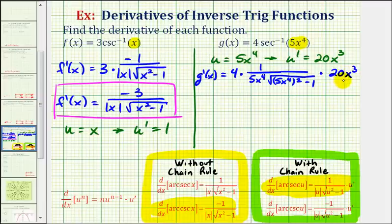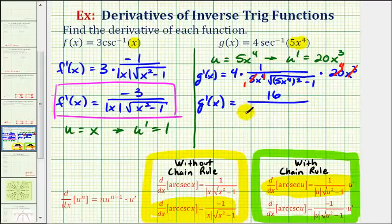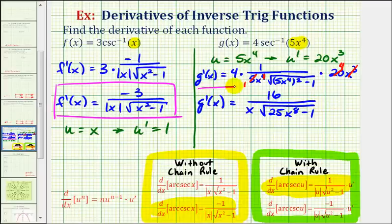Now let's simplify and find this product. Will the five and the twenty simplify? Notice how five simplifies to one, twenty simplifies to four, and x to the third divided by x to the fourth simplifies to one over x. Which means the derivative function would be sixteen divided by x, times the square root of five x to the fourth squared — well, five squared is twenty-five, x to the fourth squared is x to the eighth — minus one. So this would be our derivative function.